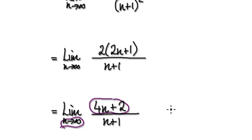the numerator will act as, well as n gets bigger and bigger it's going to act as 4n, and the denominator is going to act as n.